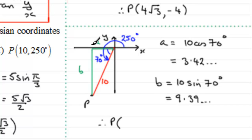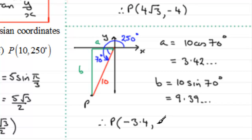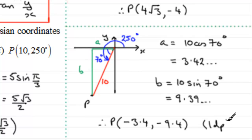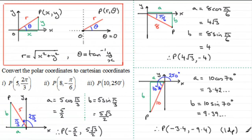Since P is in the third quadrant, the Cartesian coordinates are both negative: minus a and minus b. Giving the answers to one decimal place, P is (−3.4, −9.4). I hope this gives you a good idea of how to go about converting polar coordinates to Cartesian coordinates.